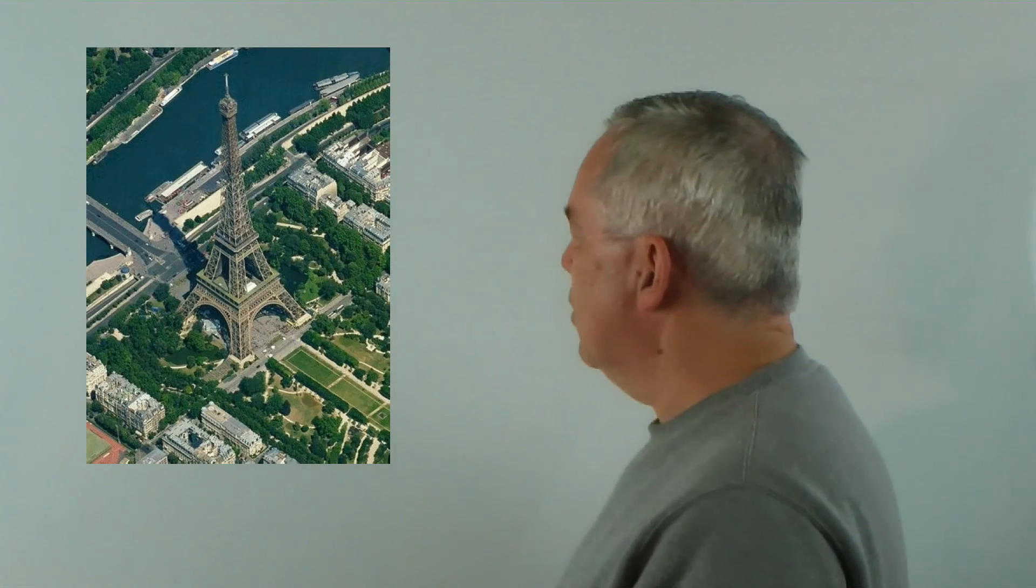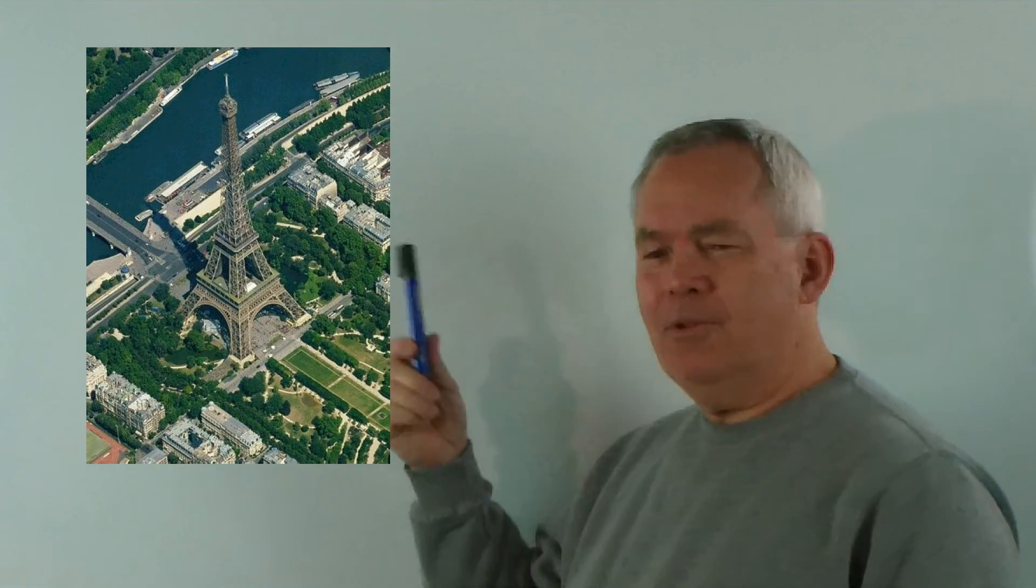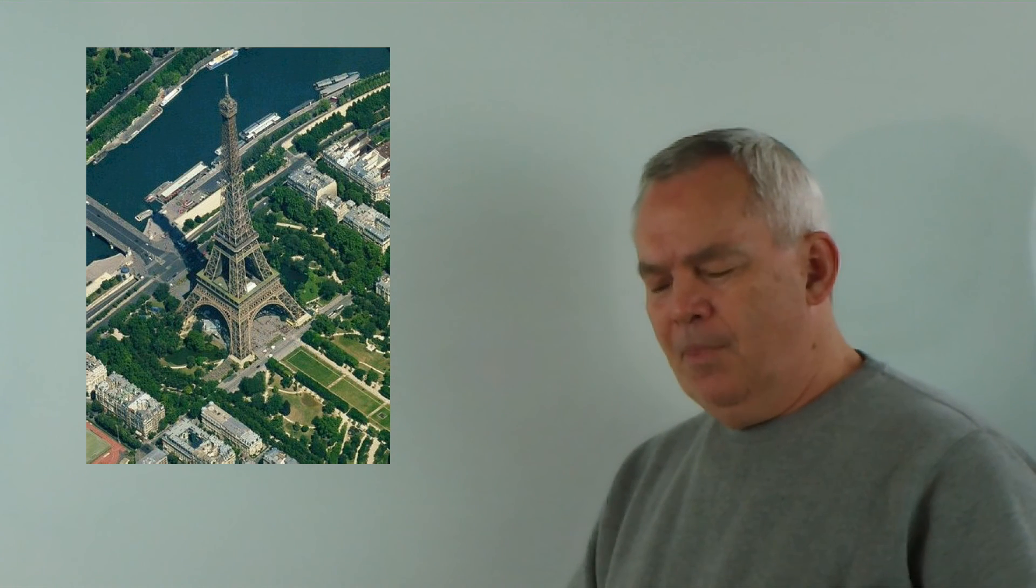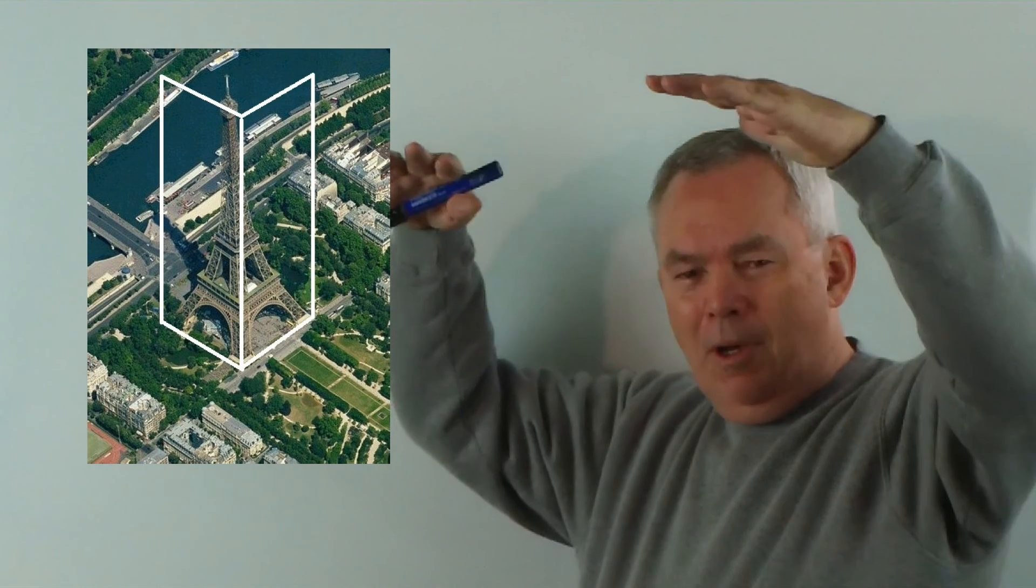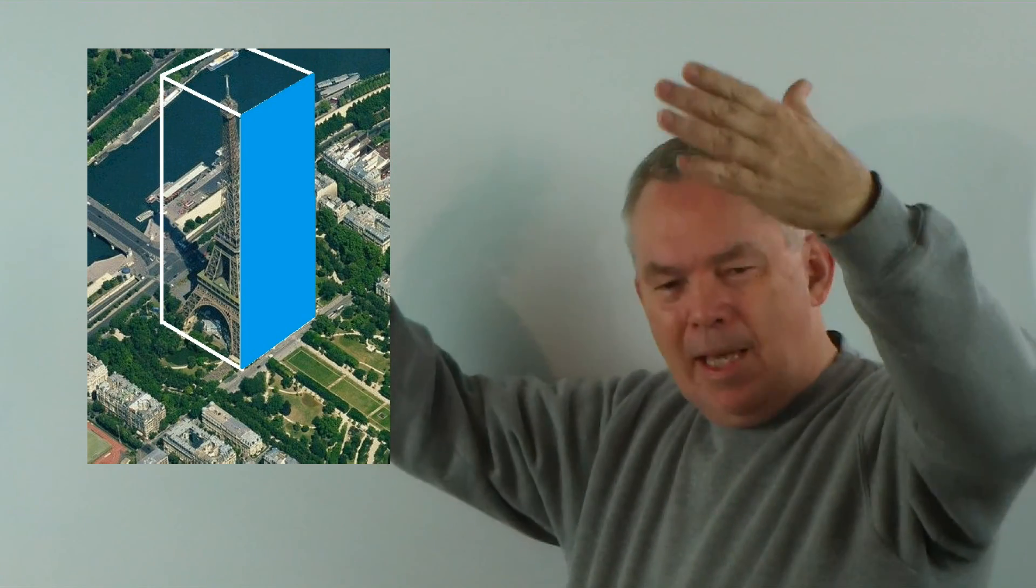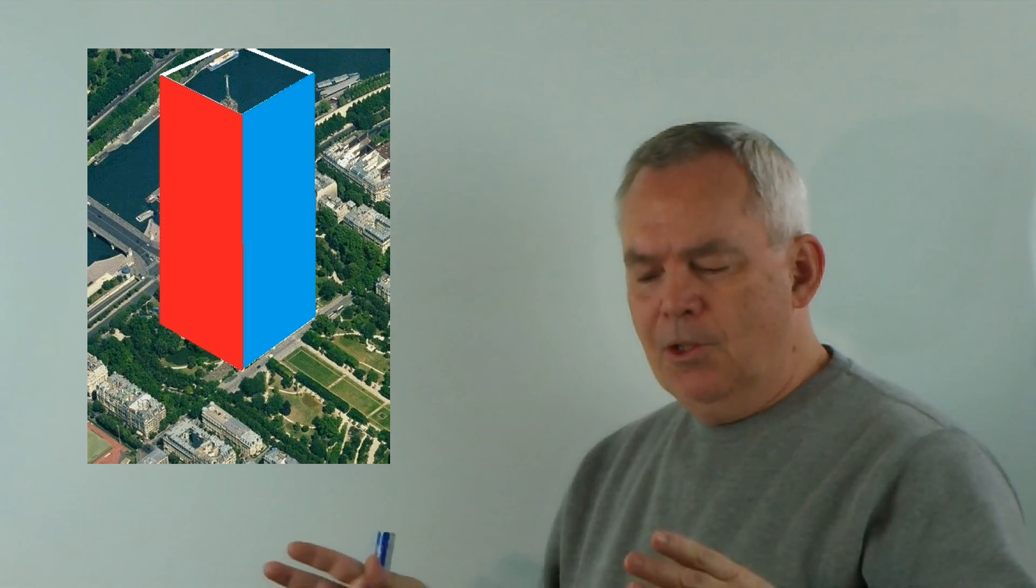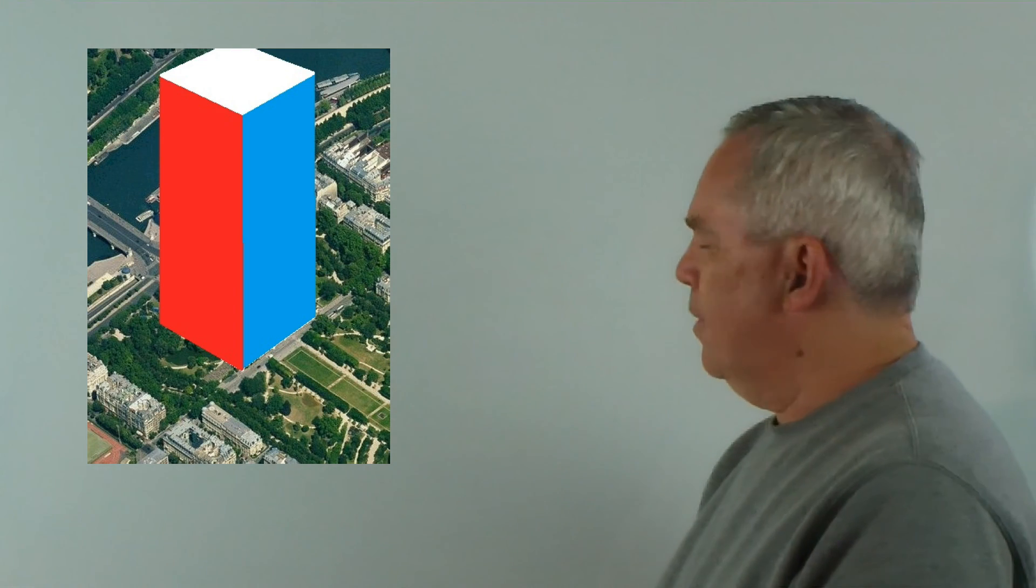So here's an experiment for you to consider. Imagine that we have the Eiffel Tower and we can — from the four corners of the base — we erect vertical struts the full height of the tower and enclose the tower in a large square prism or cuboid. Now, if we do that, here are the dimensions.